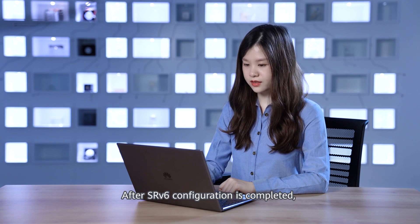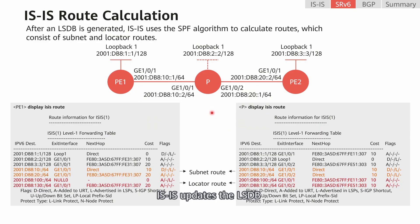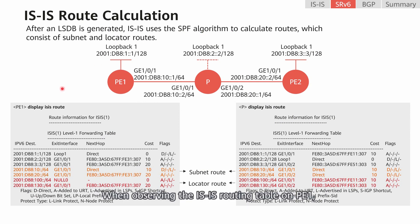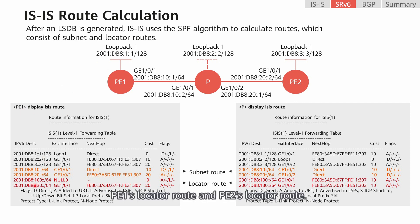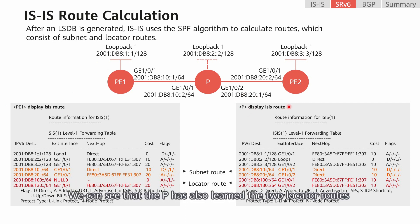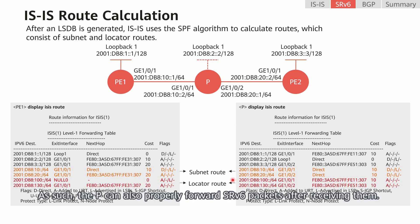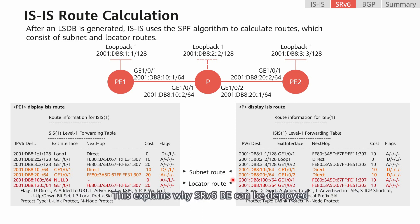After SRV6 configuration is completed, IS-IS updates the LSDB and uses the SPF algorithm to calculate routes. When observing the IS-IS routing table on PE1, we can see two new routes: PE1's locator route and PE2's locator route. Looking at the IS-IS routing table on the P, we can see that the P has also learned the two locator routes, even though SRV6 is not configured on it. As such, the P can also properly forward SRV6 packets after receiving them. This explains why SRV6 BE can be deployed together with common IPv6 devices.